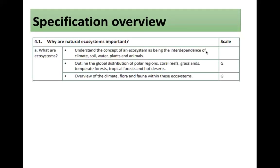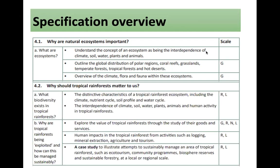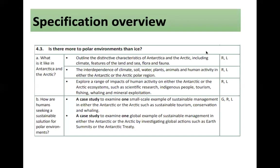The specification overview is as follows. You need to revise why natural ecosystems are important, understanding what ecosystems are, why tropical rainforests matter to us, looking at biodiversity and why they're being exploited. You also need to cover polar environments — what it's like in Antarctica and the Arctic, and how humans are seeking a sustainable solution for polar environments. The case studies for this are in two separate videos on our YouTube channel.